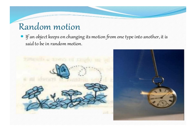If an object keeps on changing its motion from one type into another, it is said to be in random motion. For example, the motion of an object may be translatory motion or curvilinear motion. These are two types of motion known as random motion.